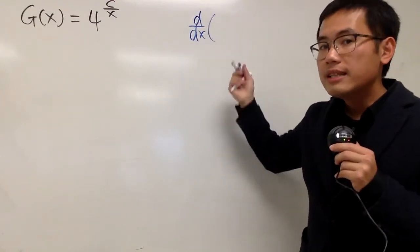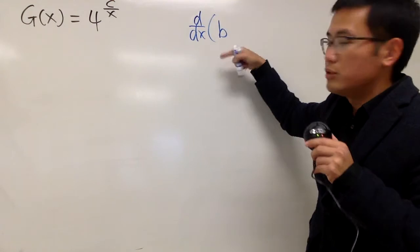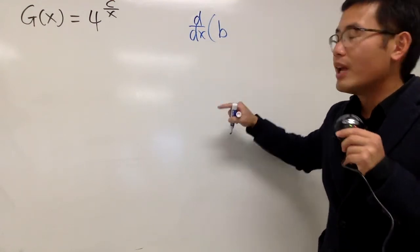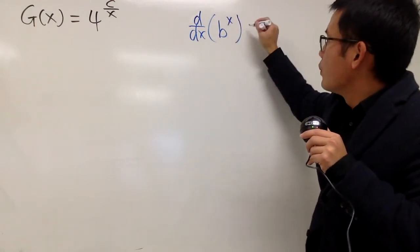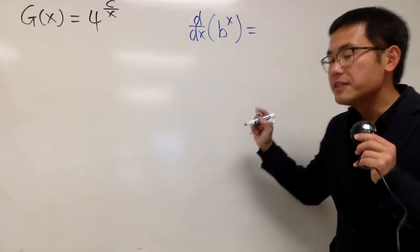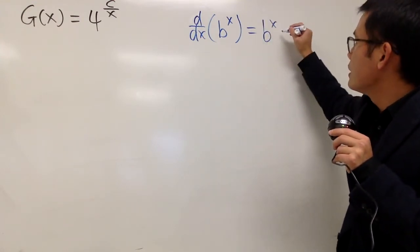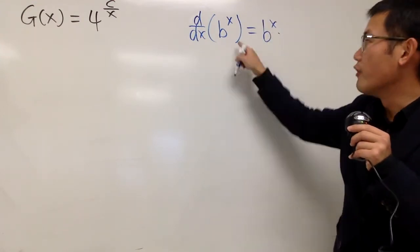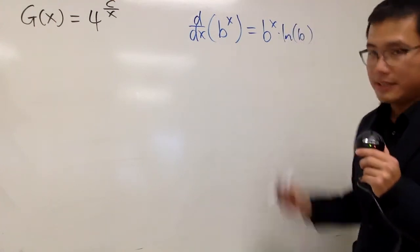When we have to differentiate, let's say we have some base b, just a number, a legitimate number, raised to the x power, well, this right here gives us b to the x power times natural log of the base, which is natural log of b, like this.